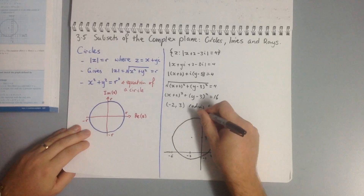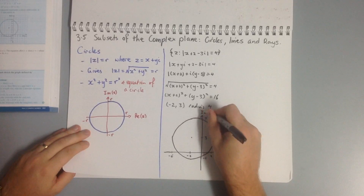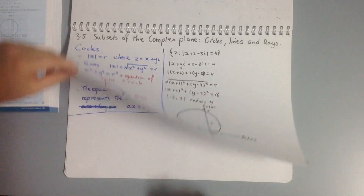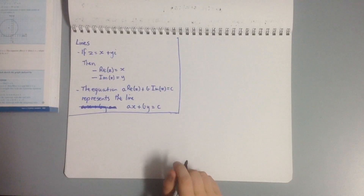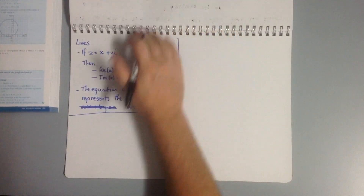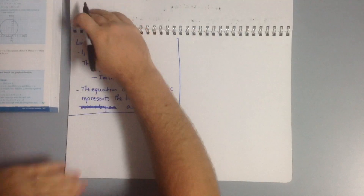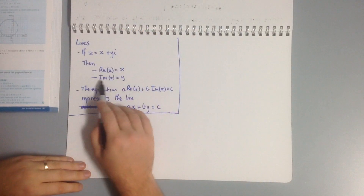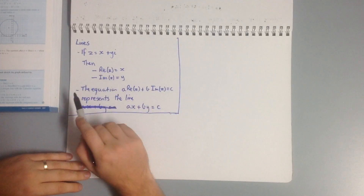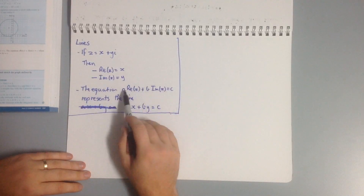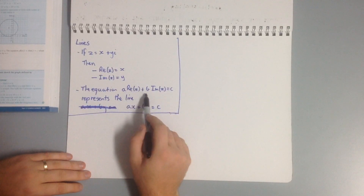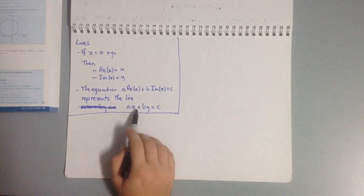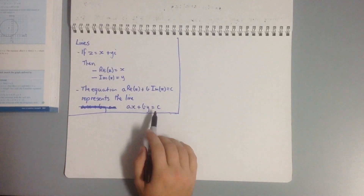Note that these are our imaginary and real axes, not a standard Cartesian plane. Now for lines: if z equals x plus yi, then the real part of z is x and the imaginary part is y. So the equation a times Re(z) plus b times Im(z) equals c represents the line ax plus by equals c.